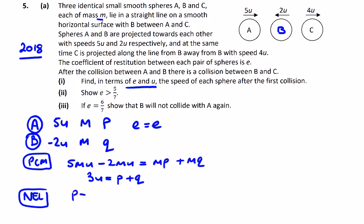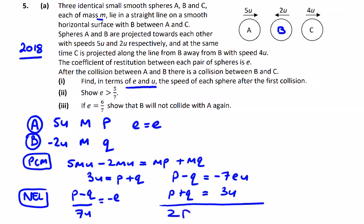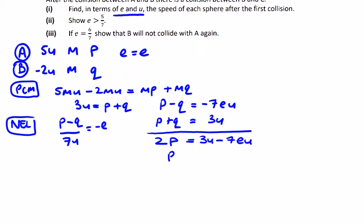Newton's law of restitution: (p minus q) over (5u minus minus 2u), over 7u, is equal to minus e. So p minus q is equal to minus 7eu. We also have p plus q equal to 3u. Simplifying by adding the equations together, we get 2p is equal to 3u minus 7eu, so p is equal to 3u over 2 minus 7eu over 2.